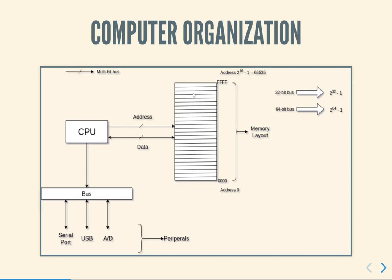The memory communicates with the CPU using a data bus which is bi-directional. You could either write from the CPU into memory or read from the memory back to the CPU. On the bottom left you would notice there is a block marked the bus to which are connected the serial port, USB, A to D, et cetera. Those are collectively known as peripherals and essentially enable communication with the outside world.